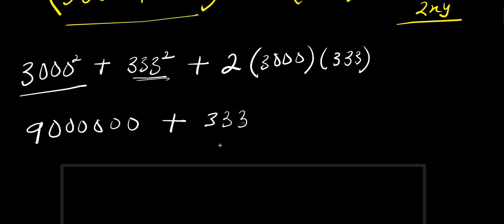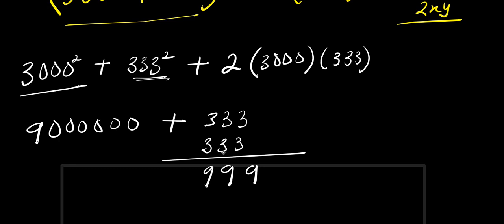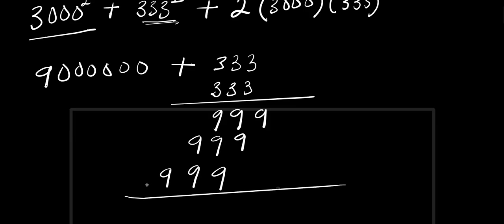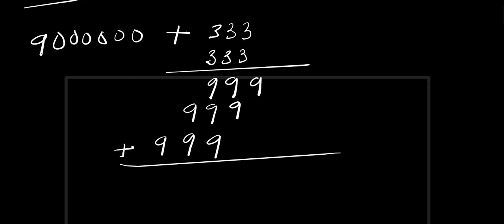Next, 333 times 333: multiplying digit by digit and adding up the partial products — 9, 9, 9 in each row — we get 9, then 18 carry 1, then 9 plus 9 plus 1 is 19 carry 1, giving us 110,889.